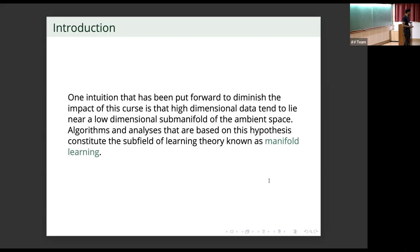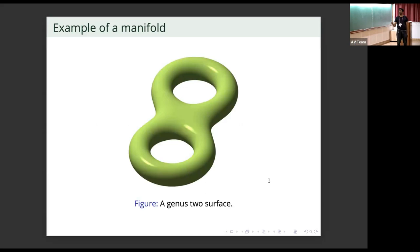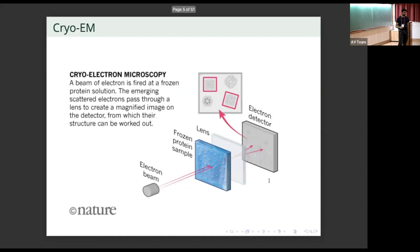One intuition that has been put forward to diminish the impact of this curse is that high dimensional data tend to lie in the vicinity of a low dimensional sub-manifold of the ambient space, and algorithms and analysis based on this hypothesis form the sub-field of manifold learning in machine learning. Here is a genus two surface — it's a two dimensional sub-manifold of R3 and an example of a lower dimensional sub-manifold of the ambient space.